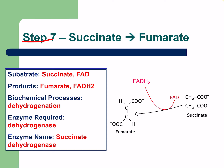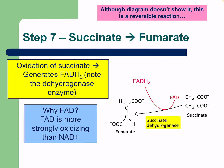Step seven: succinate to fumarate. We need succinate and FAD; the products are fumarate and FADH2. This occurs through dehydrogenation catalyzed by succinate dehydrogenase. The oxidation of succinate generates FADH2. FAD is used here because it is more strongly oxidizing than NAD+.